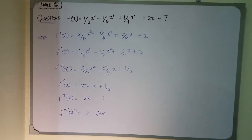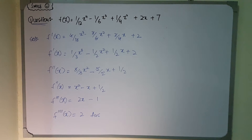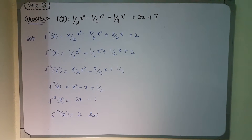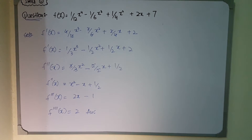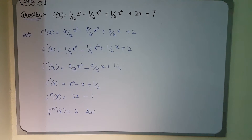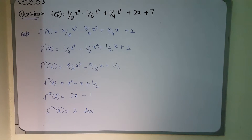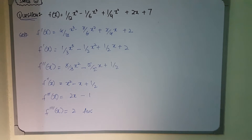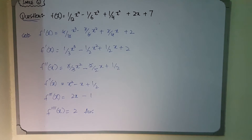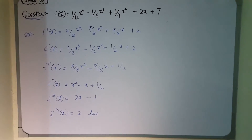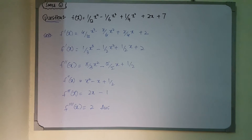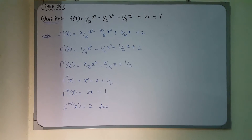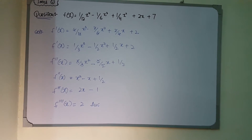Applying the power rule for f′(x): the 4 comes down and we subtract 1 from the power; −3/6 gives us the 3 coming down and power becomes 2; 2/4 gives the 2 coming down and power becomes 1; the derivative of 2x becomes 2; and the derivative of the constant 7 becomes 0, since the derivative of a constant is zero. After cancellations — fours cancel, threes cancel, twos cancel — we simplify.